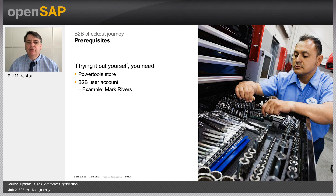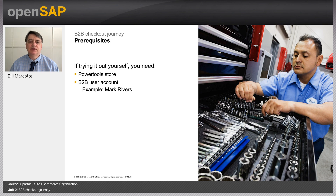If you're trying this out for yourself, I recommend using the standard SAP Commerce Cloud backend installation using the CX recipe for the latest releases with the Power Tools store enabled. If you look up the help documentation on Power Tools sample data, one of the buyers you can choose is Mark Rivers. Note that SAP Commerce Cloud doesn't ship with default passwords enabled, so there is a little bit of setup — all described in the Spartacus documentation. Alternatively, contact me to use the demo site, but I recommend doing a local setup.